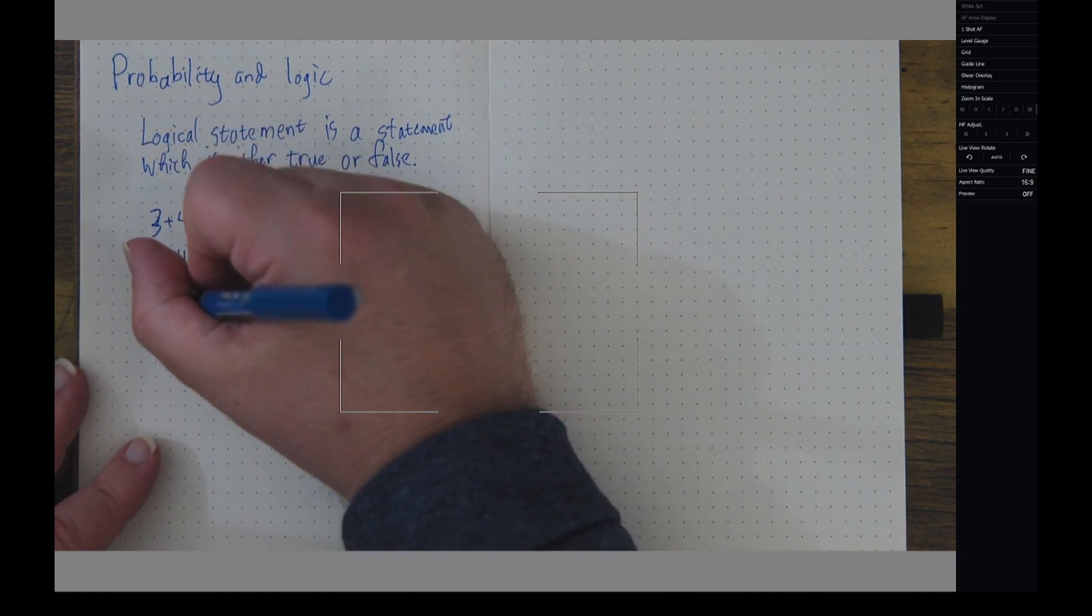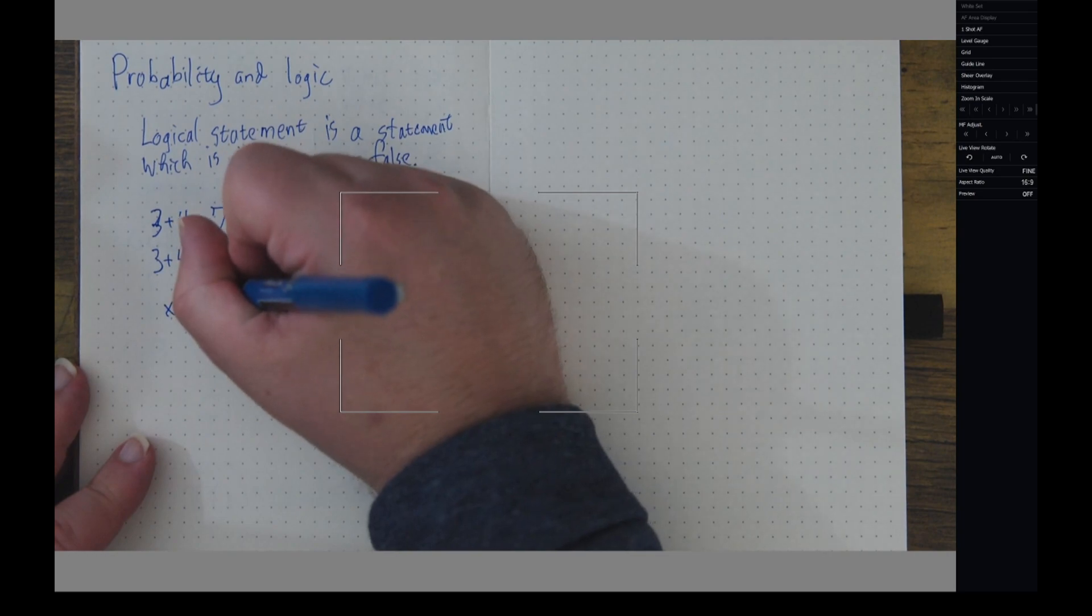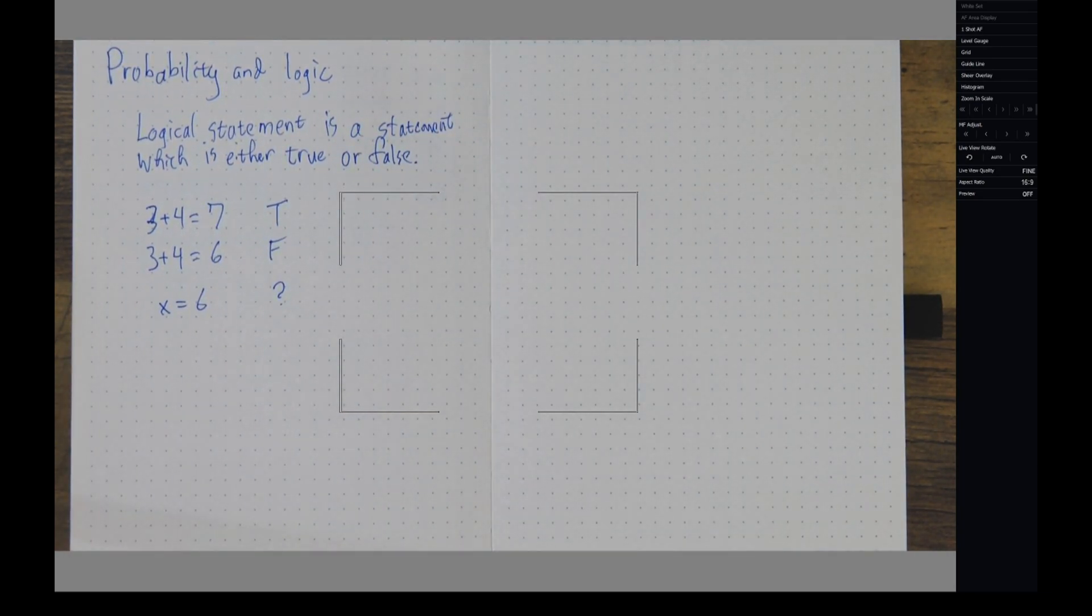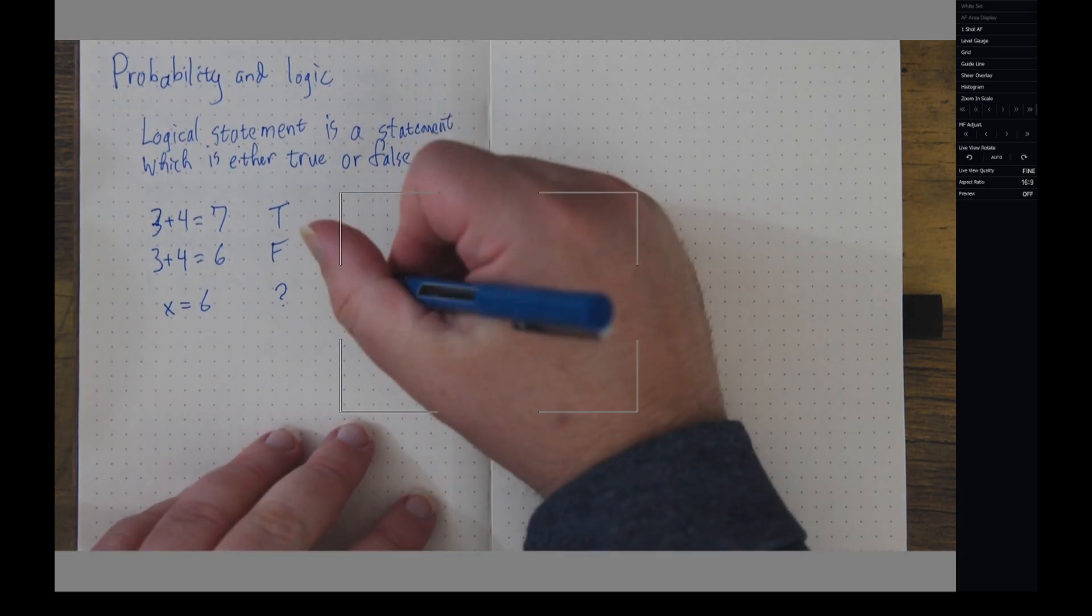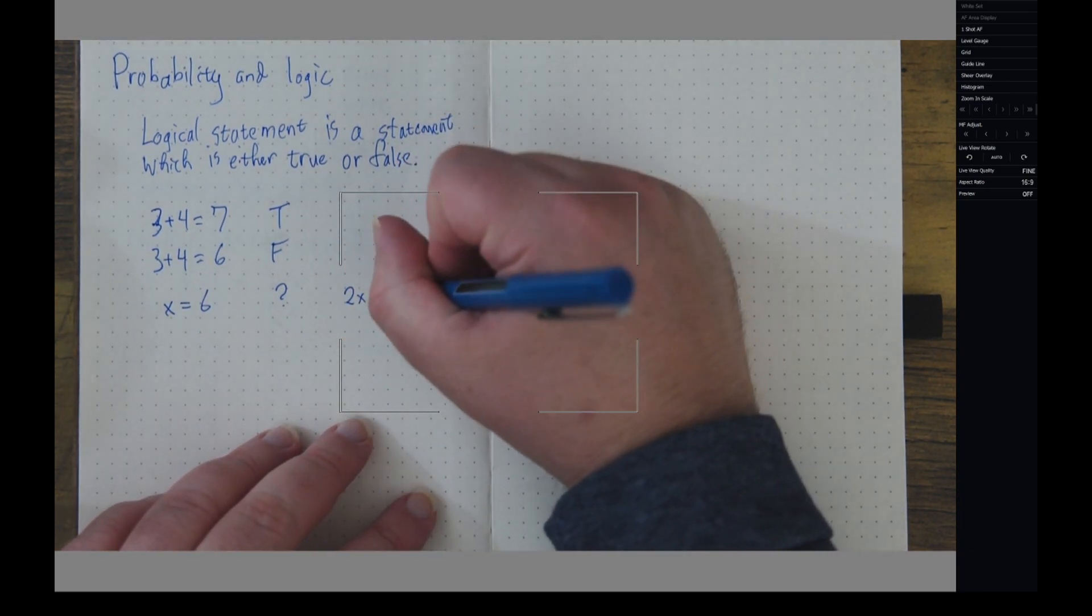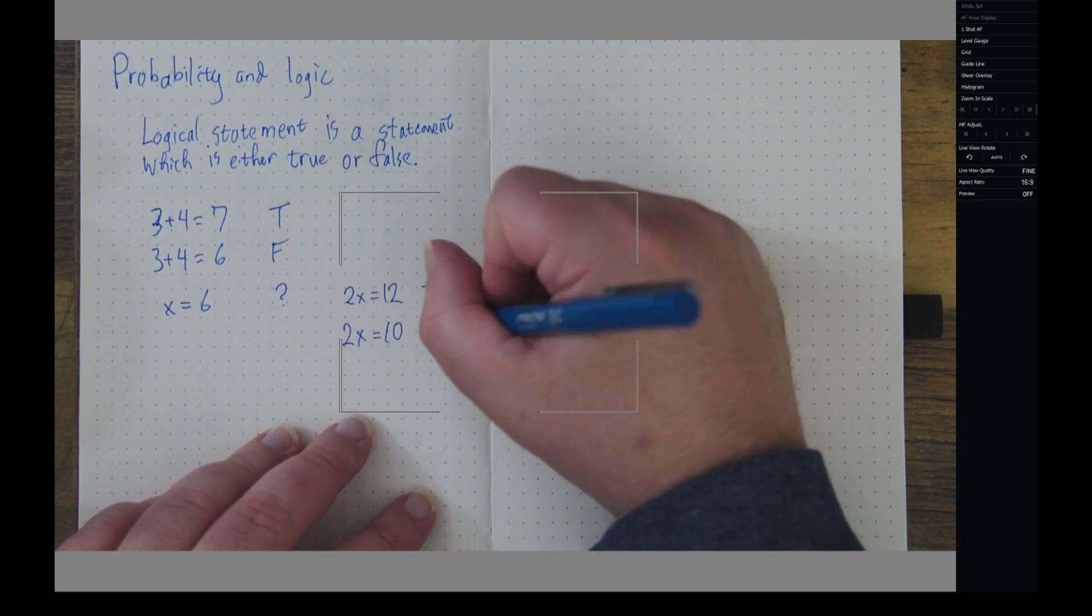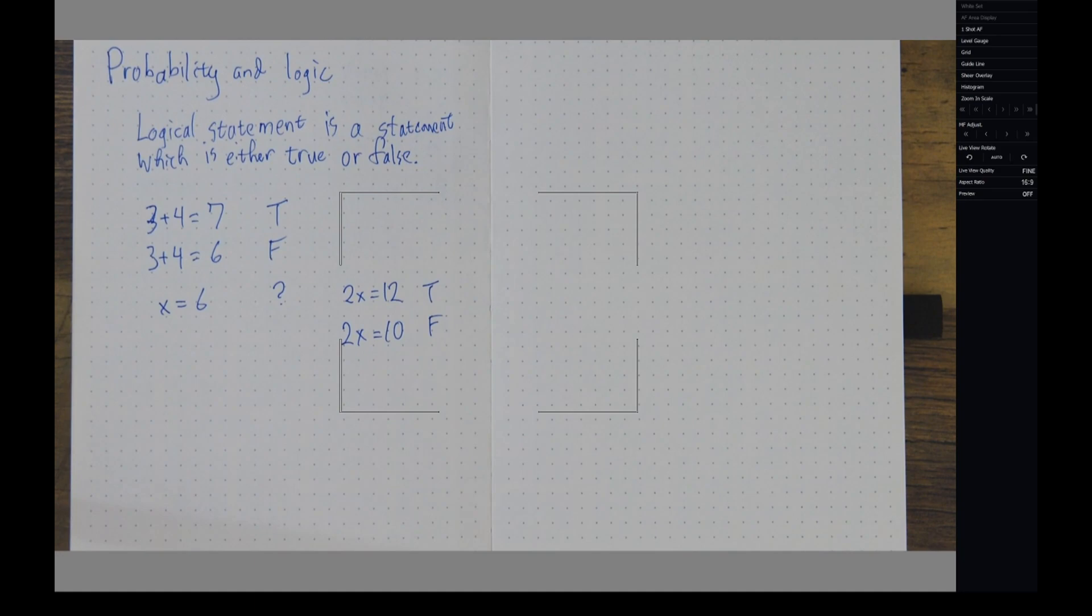Now I might say something like x equals 6, and I might not know whether that's a true statement or a false statement. If it's the solution to 2x equals 12, then it might be true. But if x is the solution to 2x equals 10, then that would be a false statement.